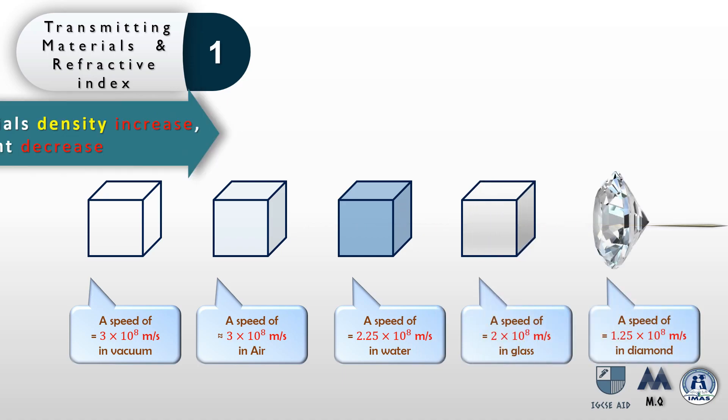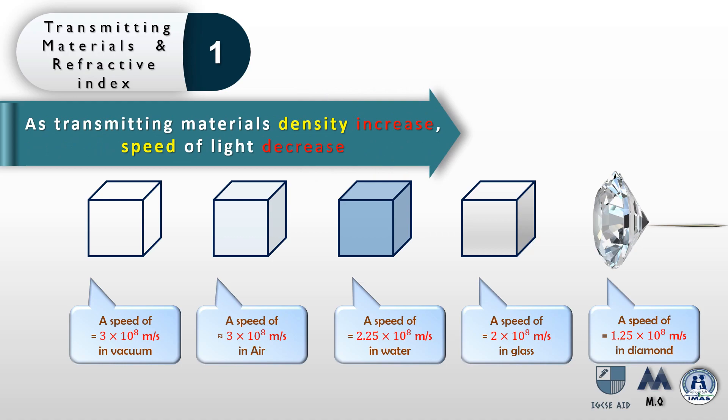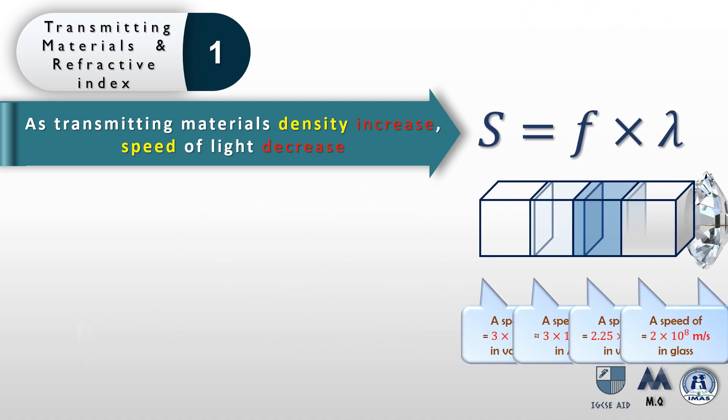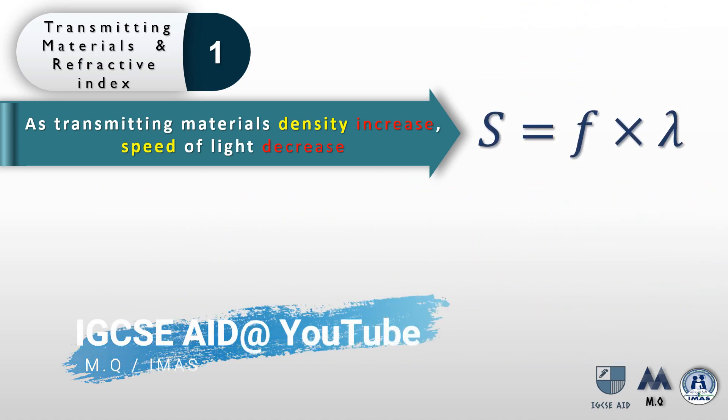It is observed from experimental evidence that the speed of light is different in different transmitting materials. The general rule of thumb is that as the transmitting material's density increases, the speed of light is going to decrease. Now think of this effect in terms of the wave speed equation.